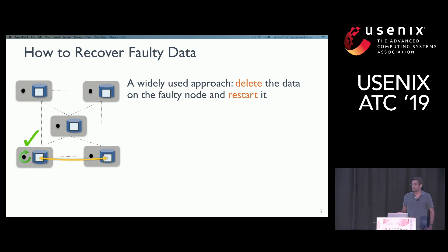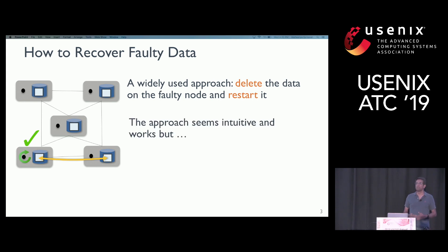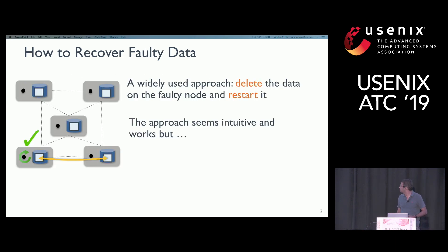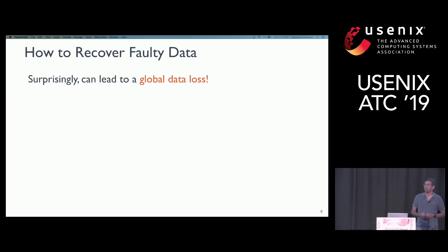In this particular case, the node is actually able to fix itself from the redundant copies on the other servers. So this approach seems intuitive and it works. However, the same approach sometimes can lead to surprisingly global data loss.